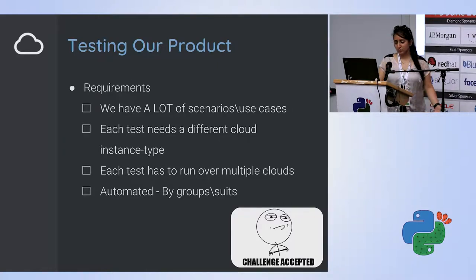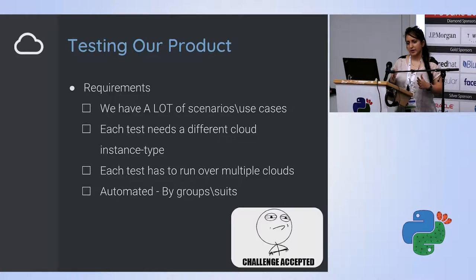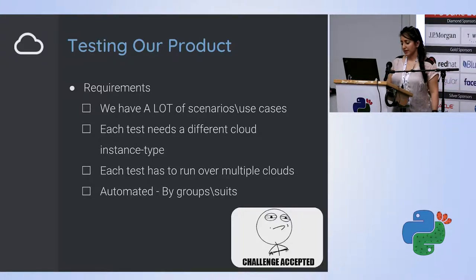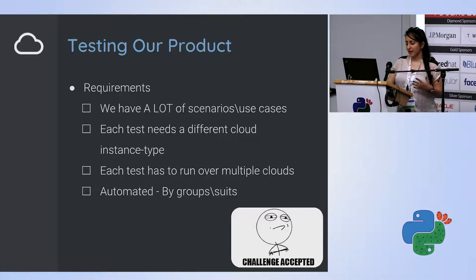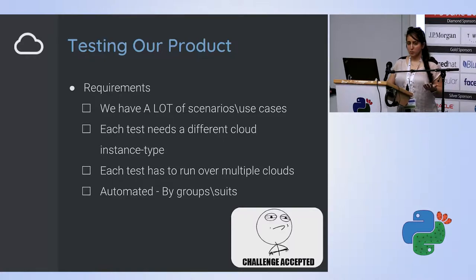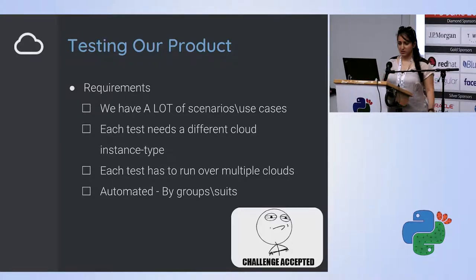Different network settings also affect hardware — sometimes I have one network card or another, which influences what instance type I take. The third requirement is that I want each test to run on multiple clouds — I want to make sure it runs well on Amazon, Google, or OCI. The last requirement is that I want it to be easily automated, because if it's not automated no one does it well. I need to run tests in groups or suites — by CPU variations, memory variations, or nightly regression runs.